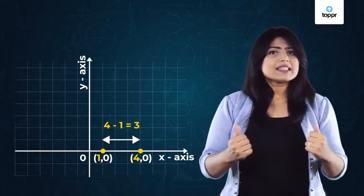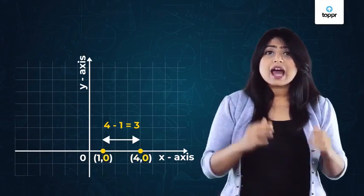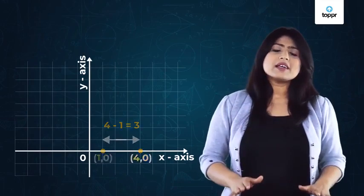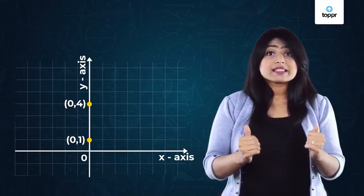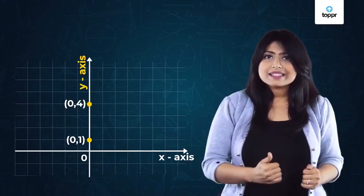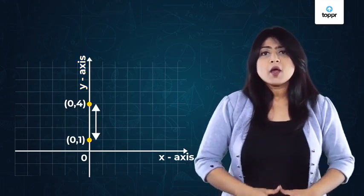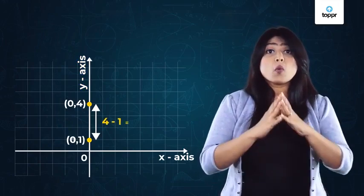Similarly, if these two points were to exist along the y axis, the distance between them would be the difference of their y coordinates.